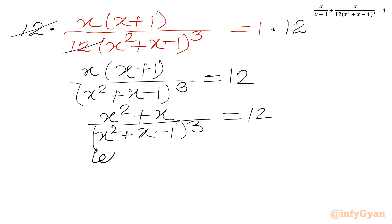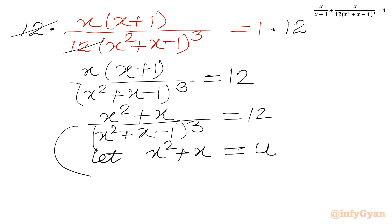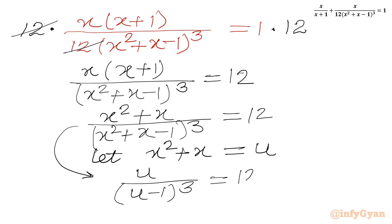So the equation is (x squared plus x) over (x squared plus x minus 1) cubed equal to 12. Now we will consider x squared plus x equal to u. So our equation becomes u over (u minus 1) cubed equal to 12.